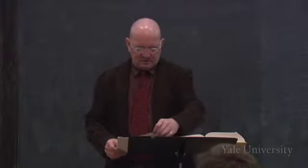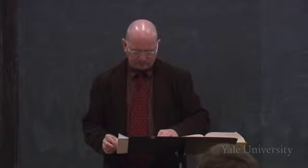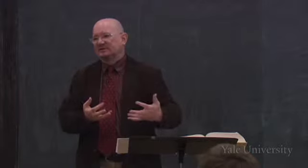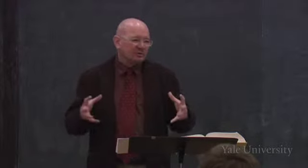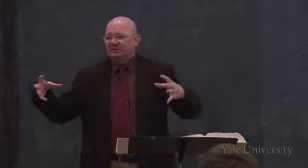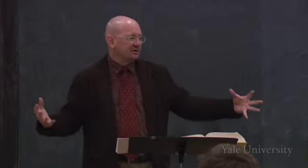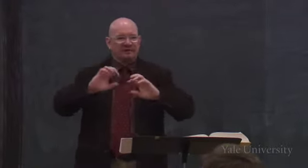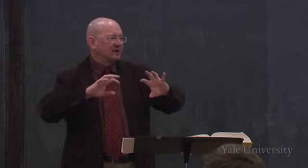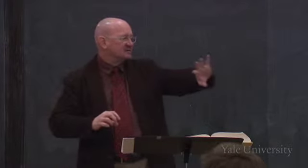Now let's look at how this plays itself out in the first letter of John. Remember how diverse we're finding Christianity — we're going to start seeing that diversity represent itself in Christology. We've already seen it in geography. According to Acts, the gospel spread in concentric circles from Jerusalem to Judea to Samaria to the ends of the earth. But if you read Acts critically between the lines, you can see it didn't really spread that way.